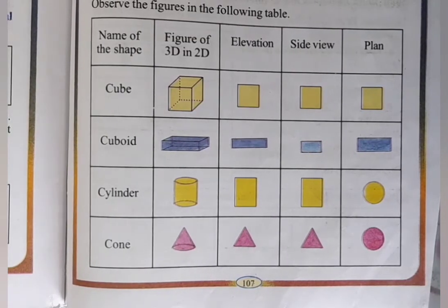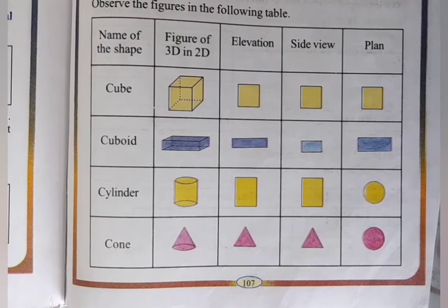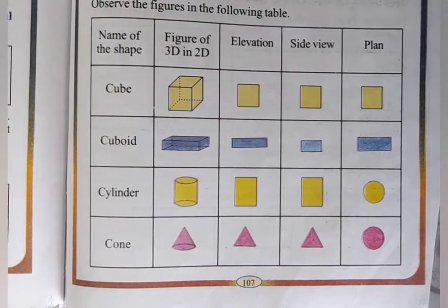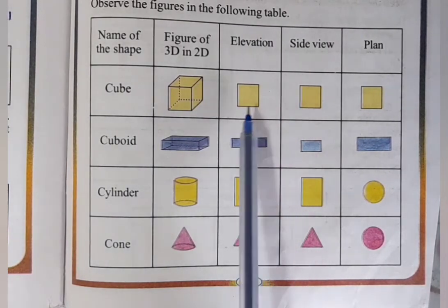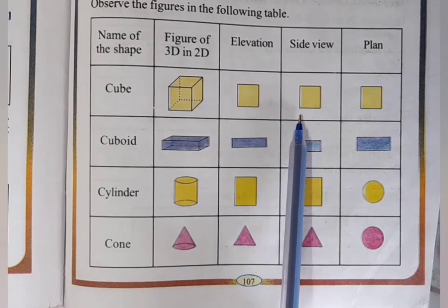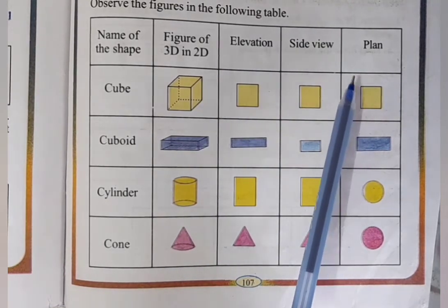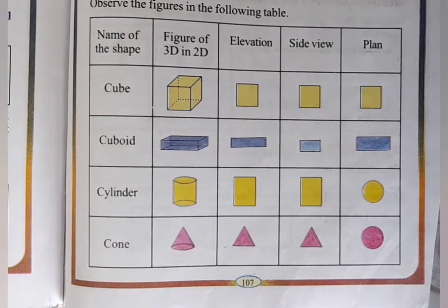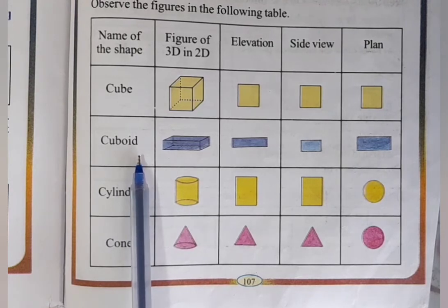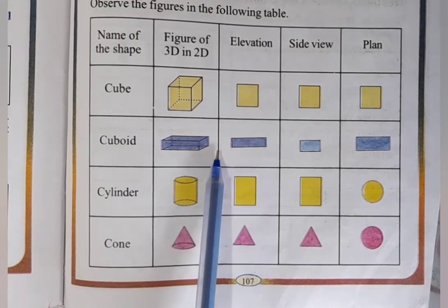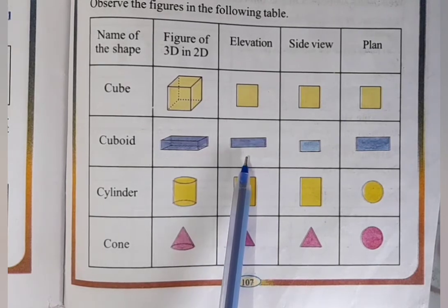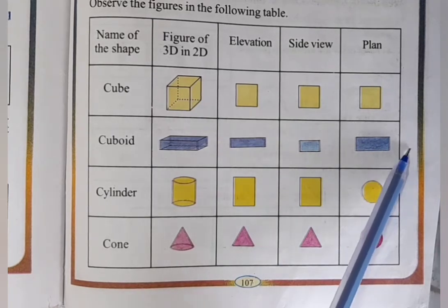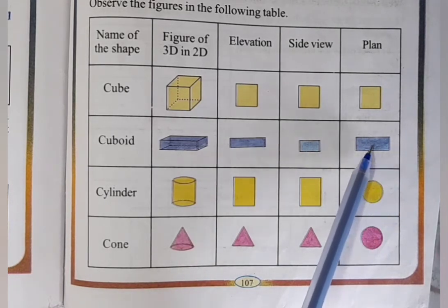Observe the figures in the following table. The first shape is a cube. In the elevation view it looks like a square, in the side view it also looks like a square, and in the plan (top view) it also looks like a square. The next shape is a cuboid: in the elevation view it looks like a rectangle, and similarly for the side and plan views.